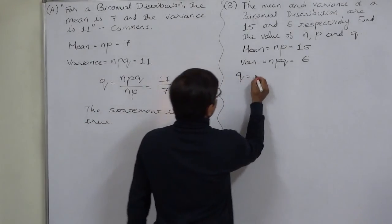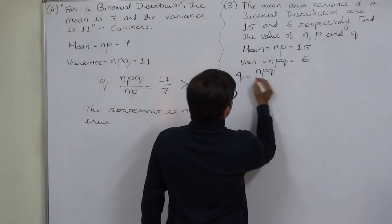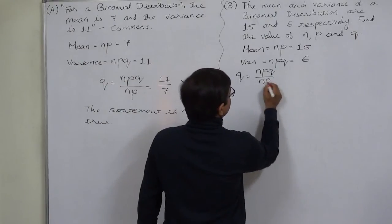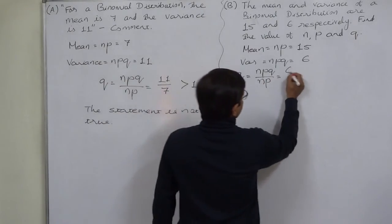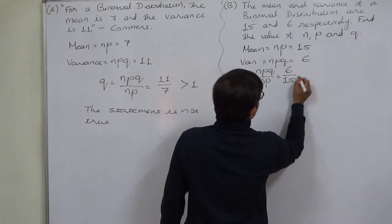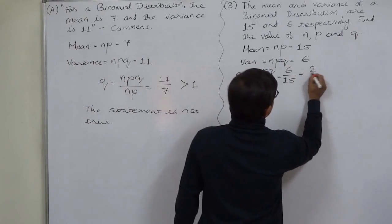NPQ divided by NP, that means variance divided by mean, that is 6 by 15, which is 2 by 5.